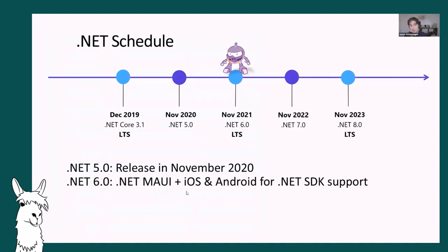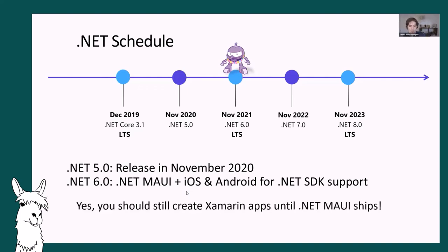.NET will release every single year starting with .NET 5, with an LTS release every other year. Core SDK and .NET 6 runtime changes come in .NET 6, same with .NET MAUI investments. Previews start in the next few months. Existing apps can migrate when .NET 6 ships using conversion tools. My recommendation: create a new Xamarin app today using Xamarin Forms, Xamarin Essentials, and Xamarin Community Toolkit - those are the things you can go do today - while having genuine excitement about where the team is going.